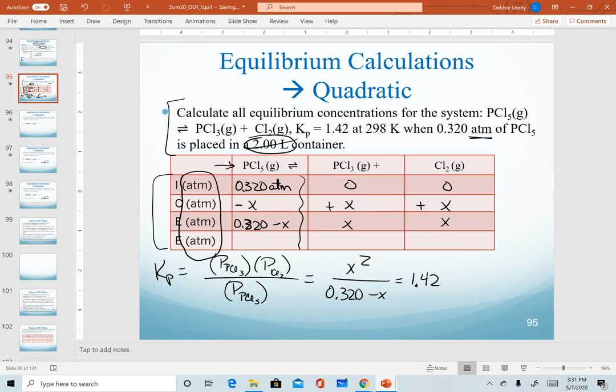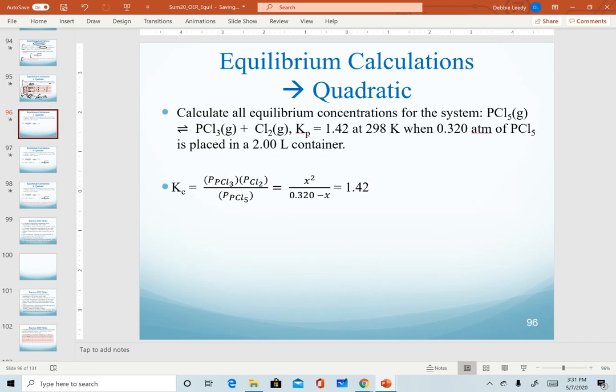Again, recognizing we don't have perfect squares. Our denominator is not a square. We don't have a small K value, so none of our other shortcuts will work. But we do have this math equation. We can now solve for our polynomial setting everything equal to zero so that we can set up for our quadratic.